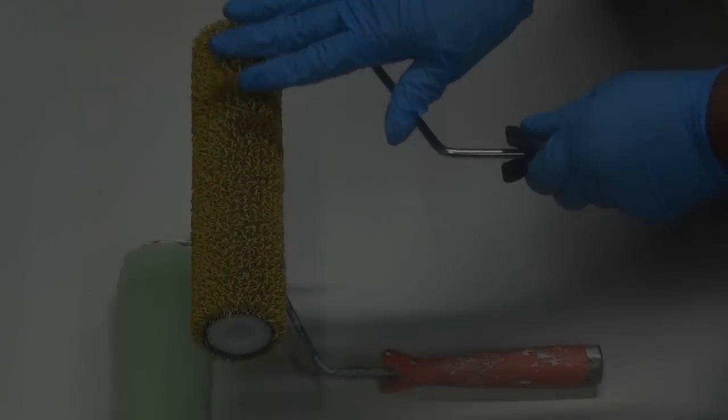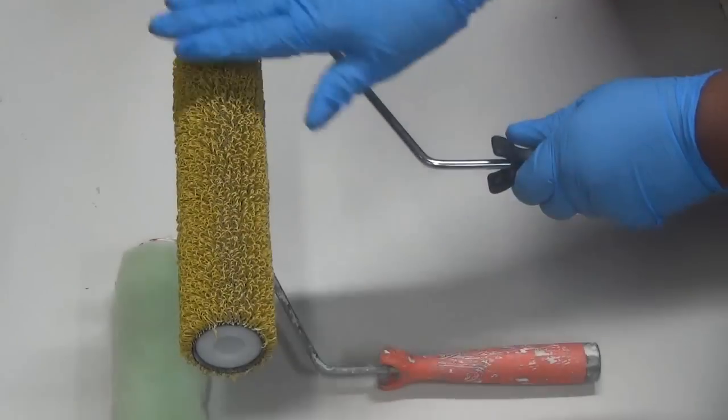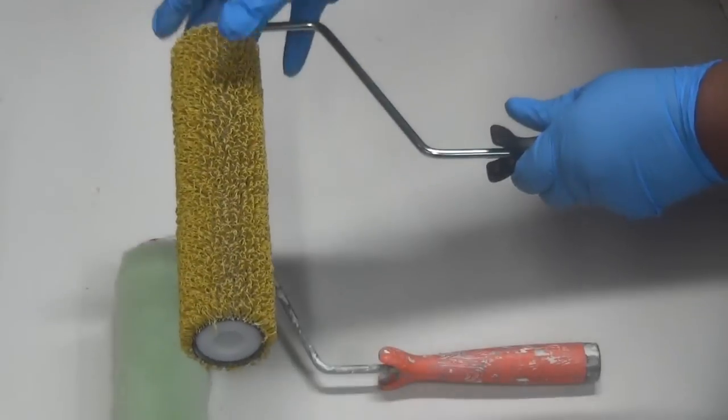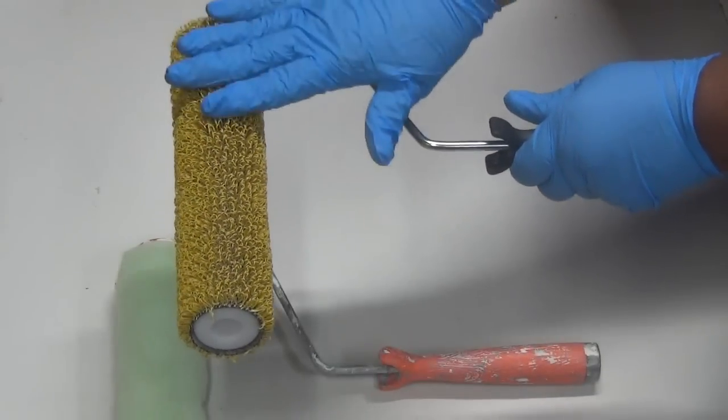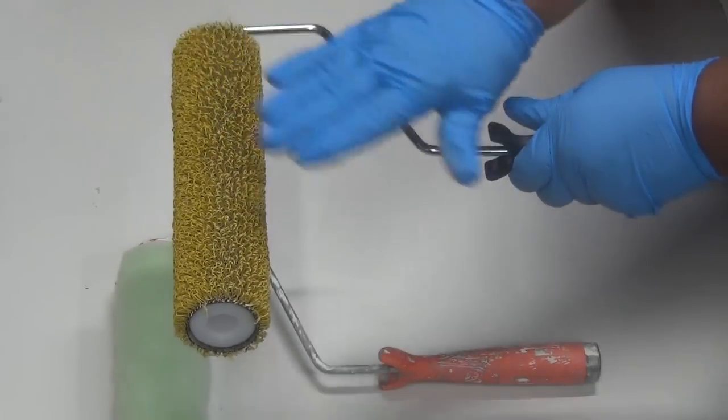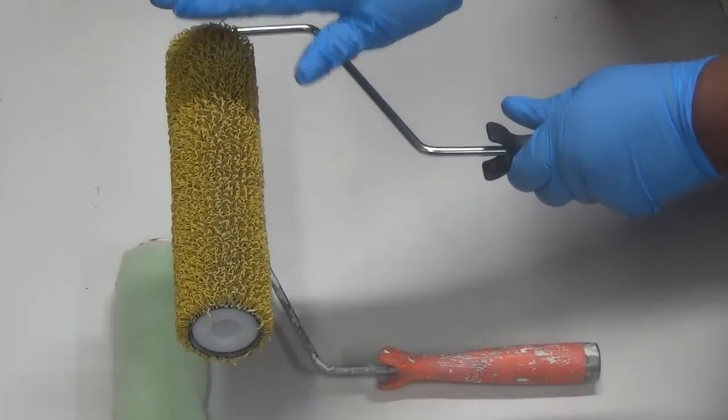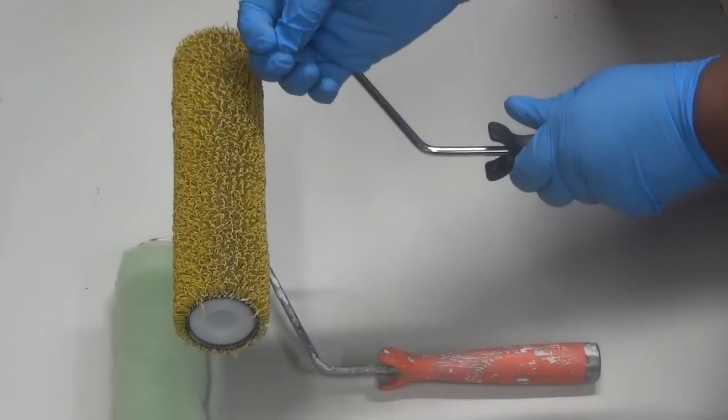So here's why I don't recommend these rollers. They're really intended to be used with textured paint, so when it comes time to clean them out they clean up really well with textured paint because it's paint. But when you use joint compound, it's very different. You can't clean the joint compound out of those loops and it hardens to a rock.